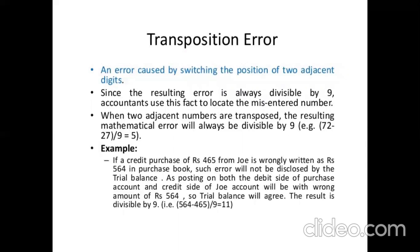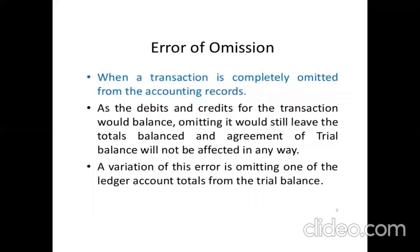A transposition error is caused by switching the position of two adjacent digits. For example, if a credit purchase of Rs. 465 is wrongly written as Rs. 564 in the purchase book, such an error will not be disclosed by the trial balance, as posting on both debit and credit sides will have the wrong amount and the trial balance will still agree. Error of omission occurs when a transaction is completely omitted from the accounting records — since both debits and credits of the transaction would balance, omitting it would not affect the agreement of the trial balance.